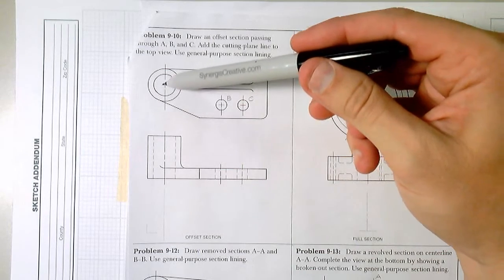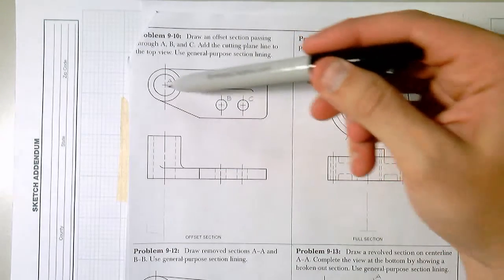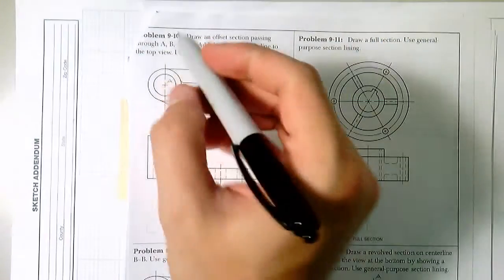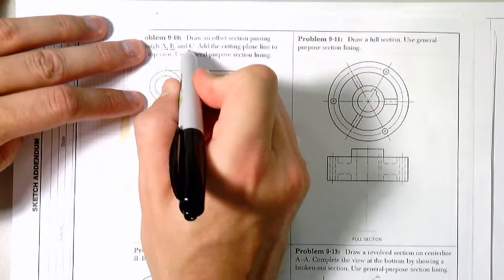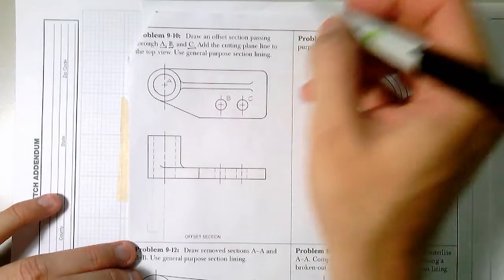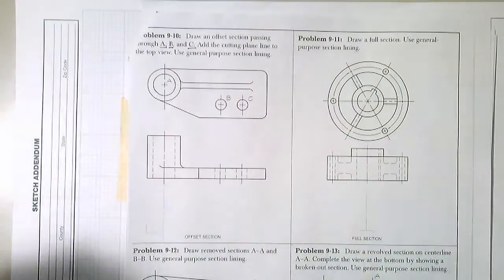One is going to be our offset section, which means the cutting plane line has to go through A, B, and C. And remember, our cutting plane line is that large bold line.